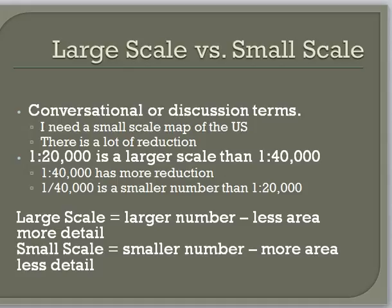A confusing term is large scale versus small scale. A lot of people use that just in general referring to maps. You might say I need a small scale map of the US. In general, you have to remember that a small scale means there is a lot of reduction. A large scale means there's not a lot of reduction, and what they're talking about is that fraction. A ratio scale of 1 to 20,000 is a larger scale than a ratio of 1 to 40,000 — just like eating half a pizza is a larger portion than eating a quarter of a pizza. The larger the denominator, actually the smaller the number.